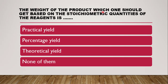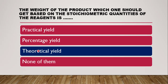Next question: the weight of the product which one should get based on the stoichiometric quantities of the reagent is — whether it is practical yield, percentage yield, theoretical yield, or none of them. The correct answer is theoretical yield, since theoretical yield is based on the molecular weight and stoichiometric quantities of the reagent, that is, the proportion of reagent used.